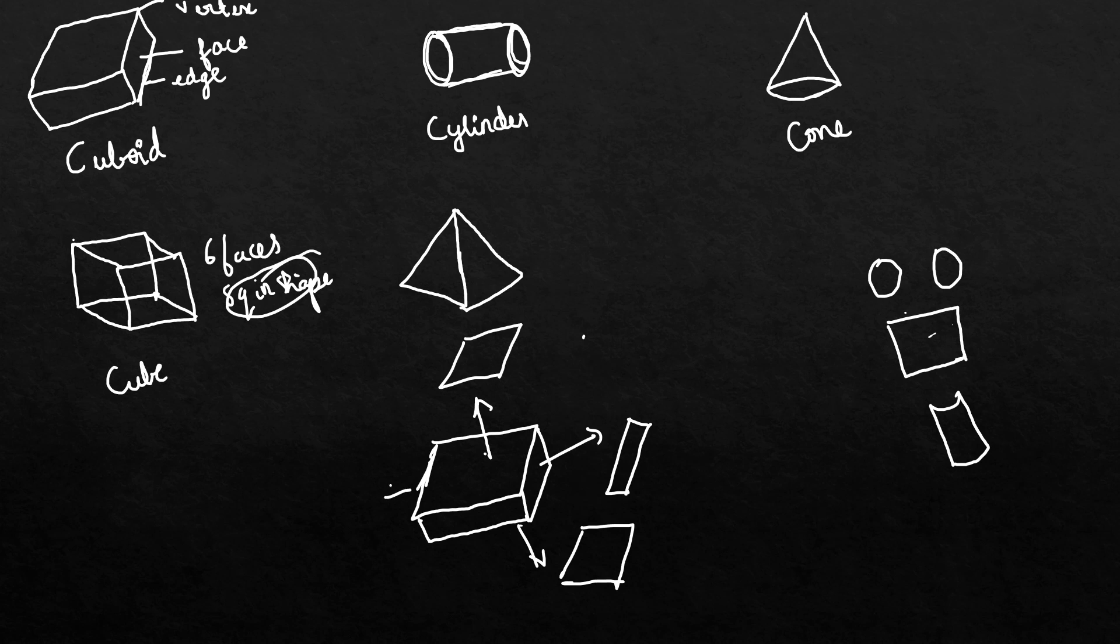Here also, here also, it's like this. All six faces are rectangular in shape, and opposite faces are identical. Opposite faces are identical means similar.